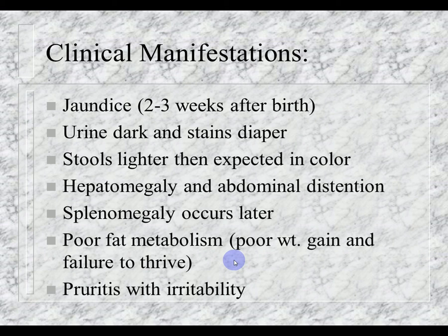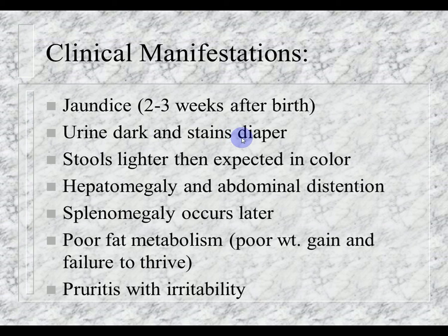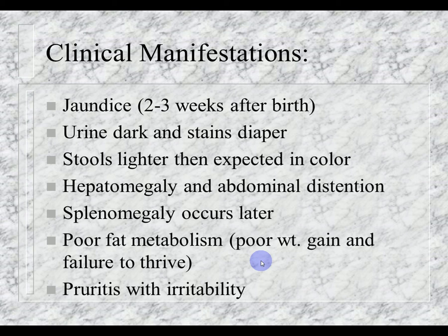Clinical manifestations — also in a box on page 799 — include: jaundice appearing 2 to 3 weeks after birth (starting in the sclera then skin, and persisting); dark urine that stains diapers due to excretion of bile salts and bilirubin; stools lighter than expected in color due to absence of bile pigments; hepatomegaly and abdominal distention; splenomegaly; poor fat metabolism; poor weight gain and failure to thrive; and pruritus with irritability. These children can look malnourished with thin extremities and a large distended abdomen that feels very heavy due to organomegaly.